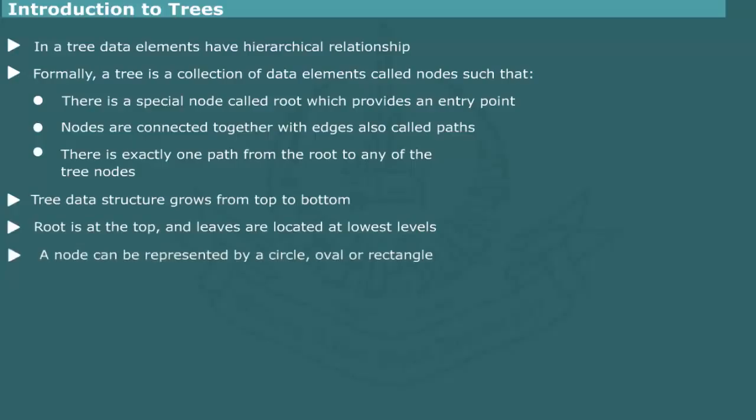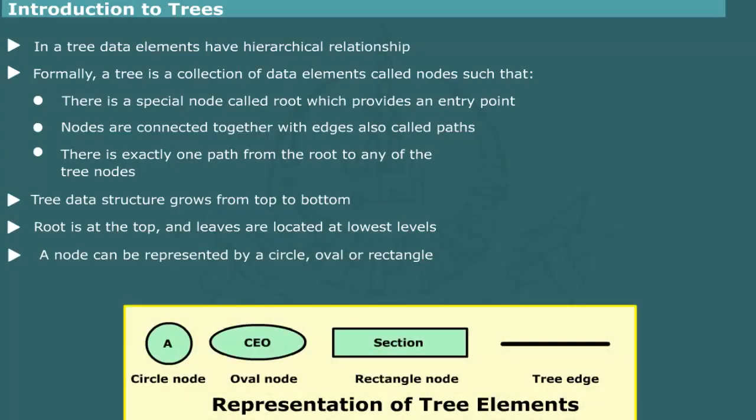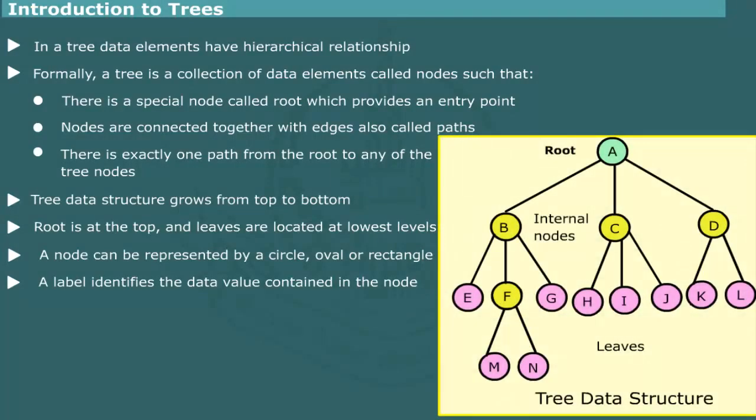A node is represented by a circle, oval, or rectangle. It is usually labeled with the data value contained in the node. The edges are shown by slanted lines. By convention, tree is portrayed from top to bottom. The direction of edges is therefore omitted. Figure shows an example of tree data structure.